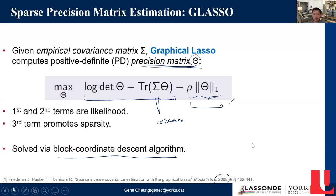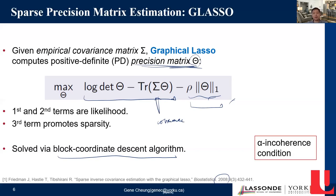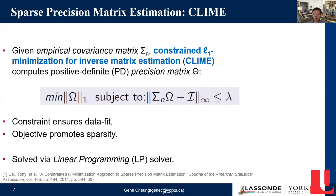Interestingly, in graphical lasso there's no notion of graph — just the notion of a sparse precision matrix, with no concept of graph frequencies. Graphical lasso performs well when it satisfies the alpha incoherence condition, which is not always true. This motivates the second scheme called CLIME — Constrained L1 Minimization for Inverse Matrix Estimation.